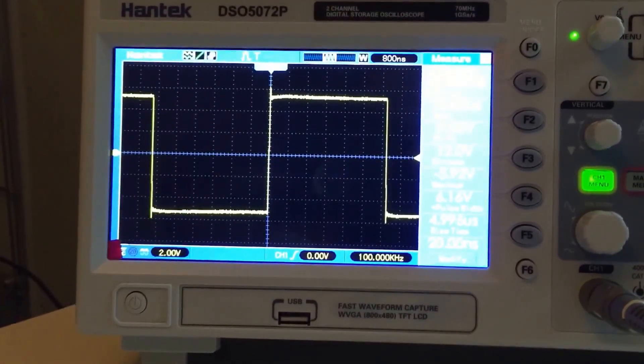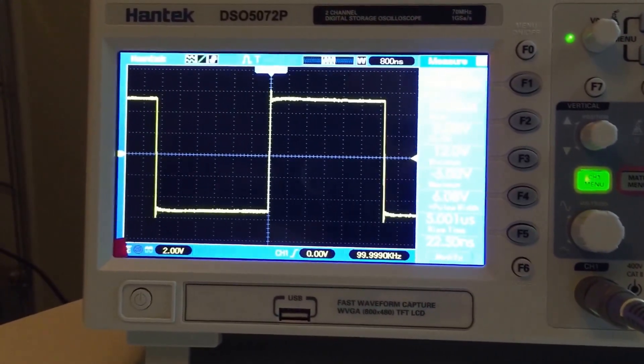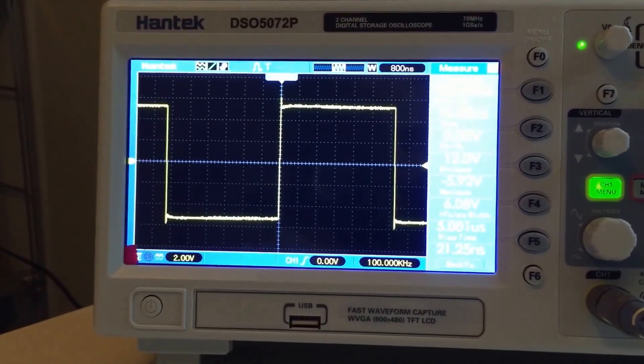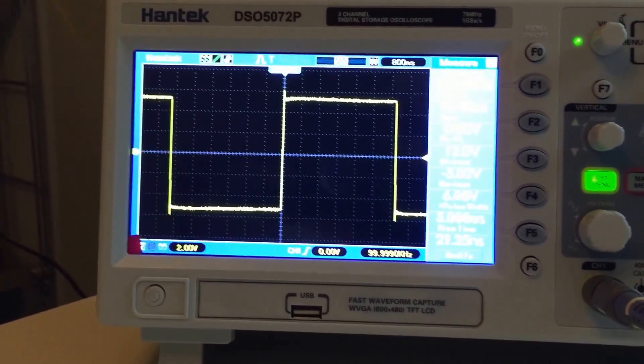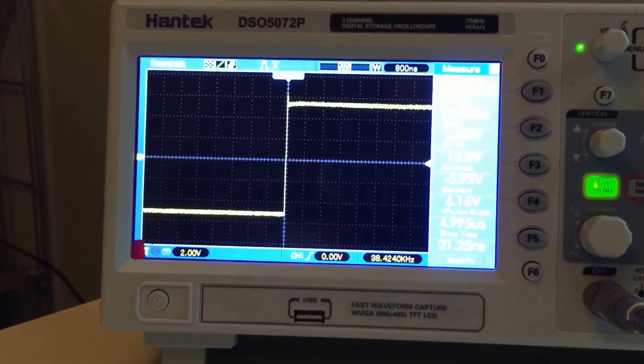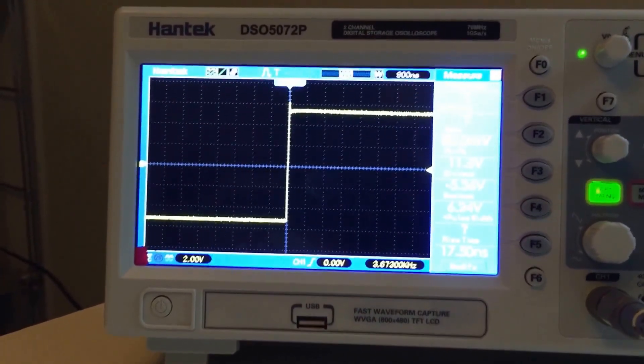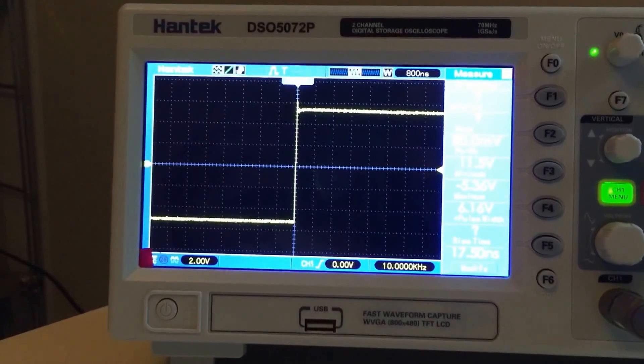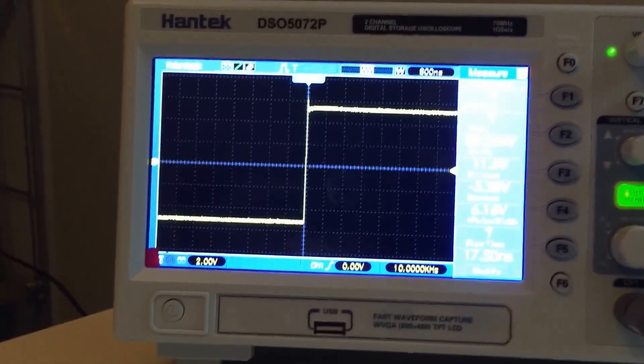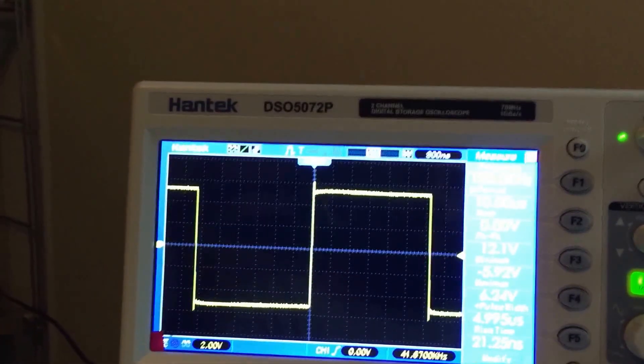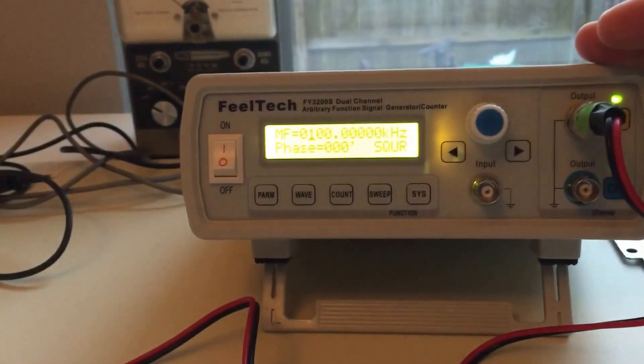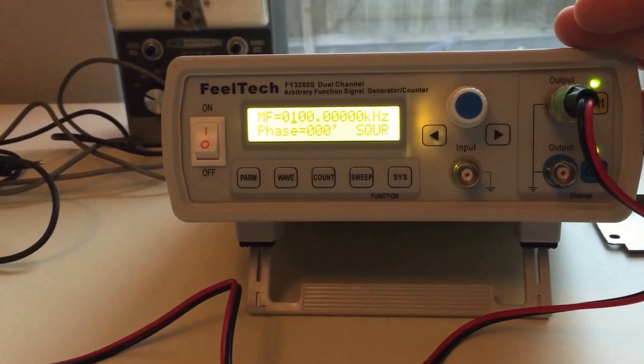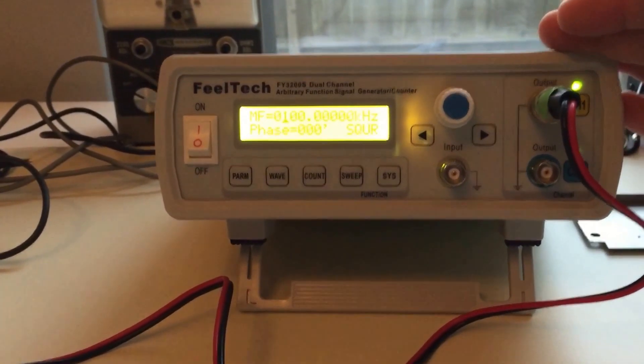We see pretty much a square wave, we could bring it down a bit. That's about 10 kilohertz, drop that down, we'll go to 100 kilohertz. Now what's interesting is that this is advertised as a function generator up to 20 megahertz.